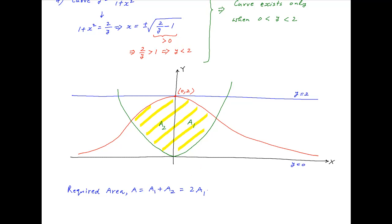By symmetry, A1 = A2, and therefore the required area A = 2·A1. Now let us assume that P is the point of intersection of the two curves y = x² and y = 2/(1 + x²).